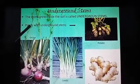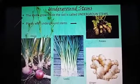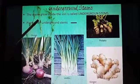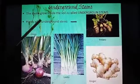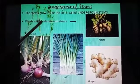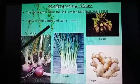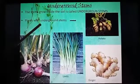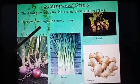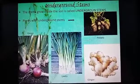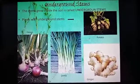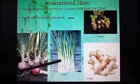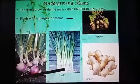The stem that grows inside the soil is called the underground stem. Plants with underground stems: potato, onion, leeks and ginger.